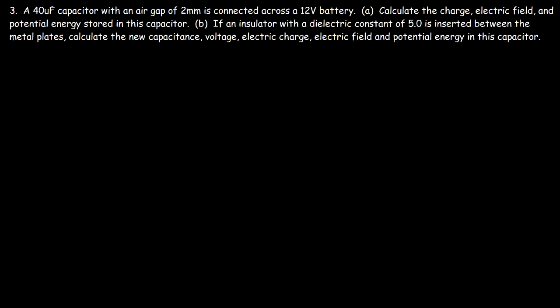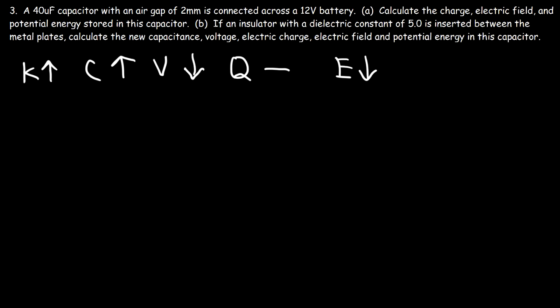In the last two problems, we saw that if we add an insulator and increase the dielectric constant of a capacitor that is not connected to a battery: the capacitance increased proportionally, the voltage decreased, the electric charge remained the same, the electric field decreased, and the potential energy stored in the capacitor decreased.